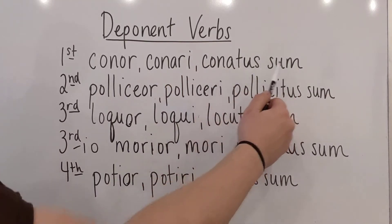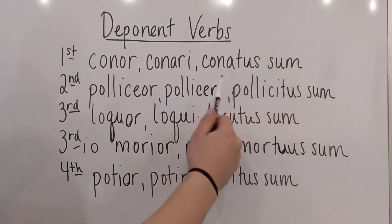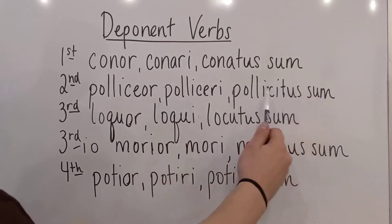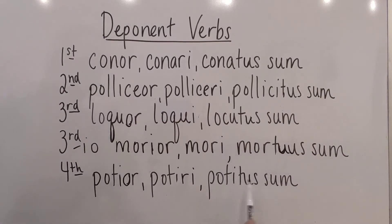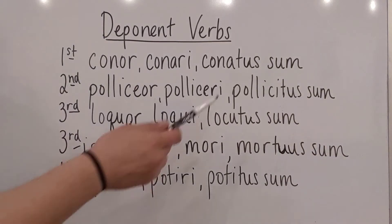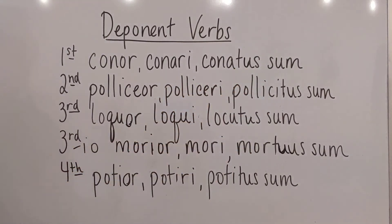And then we just get the supine. This is the perfect passive: conatus sum — 'I tried.' 'I promised.' 'I spoke.' 'I died.' 'I gained the advantage of.' It's just that it's in the passive, and you would change that tense of sum to eram or ero, etc., to change it to pluperfect or future perfect, because we don't have perfect active. So we don't need a third principal part or a perfect stem.